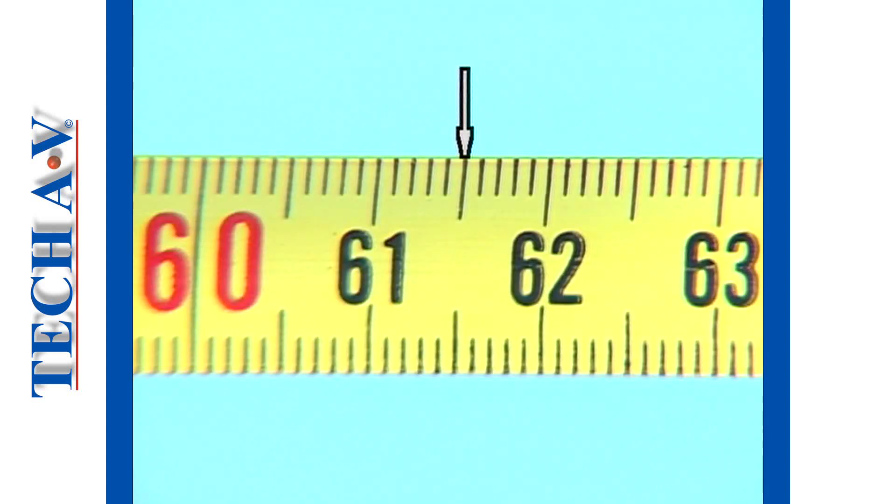Have you noticed that one of the unnumbered millimeter lines between every centimeter mark is a little bit longer than the shortest lines? This is done so that you can see every fifth millimeter more easily.